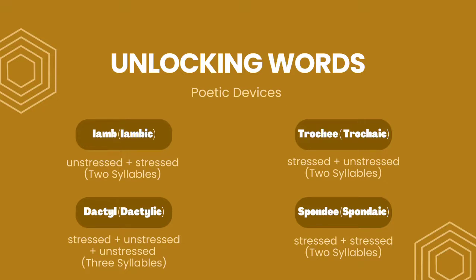First is the iamb or iambic — it is unstressed then followed by stressed, and it has two syllables. When it is unstressed it is unaccented or short; on the other hand, if it is stressed then it is accented or long. Next is the trochee or trochaic, which is stressed plus unstressed, and it also has two syllables. Next is the dactyl, wherein it is stressed then followed by two unstressed syllables, and it has three syllables. Lastly, the spondee, which is stressed then followed also by stressed, and it has two syllables.